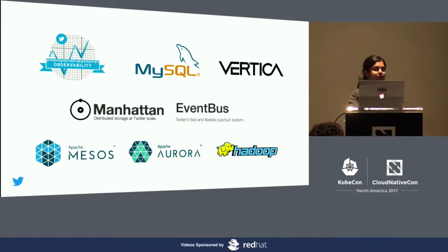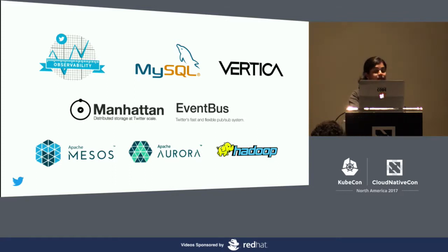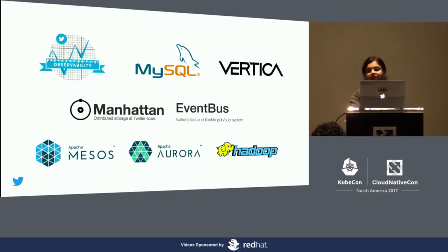Twitter has invested heavily both in in-house and open-source technologies that power its core infrastructure primitives such as compute, storage, databases, etc. In fact, the focus has been on enabling multi-tenancy right from the start. This introduces unique resource allocation, capacity planning, and ownership challenges.